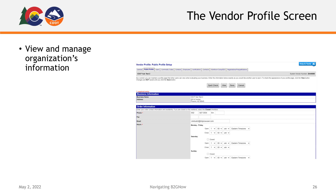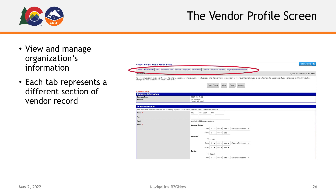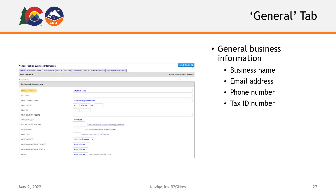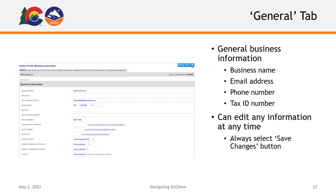Your vendor profile is where you can view and manage your organization's information in B2GNOW. Each tab at the top of this screen will take you to a different section of your vendor record. The first tab at the top of your vendor profile is the General tab. This section will display all of your general business information such as your business name, email, phone number, and your tax ID number. You can edit any of this information at any time, but always ensure to select the Save Changes button at the bottom of the screen to ensure any changes you've made are saved.